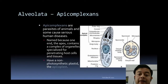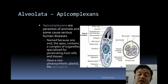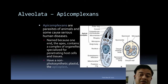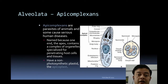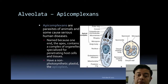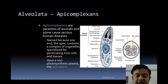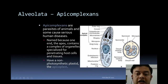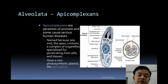Apicomplexes are the next group — all are parasites of animals and many cause serious human disease. They are named for their apical complex: a specialized organelle at the apex used specifically for penetrating host cells. They also possess a non-photosynthetic plastid called the apicoplast. The apical complex includes polar rings, a conoid, micronemes, and rhoptries — all specialized for host cell invasion.